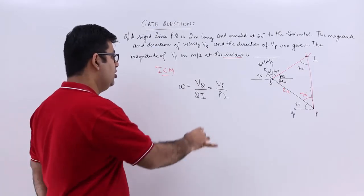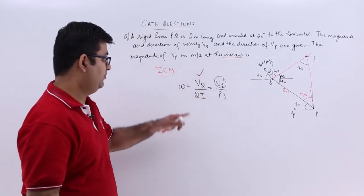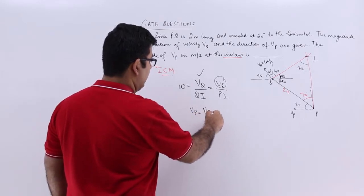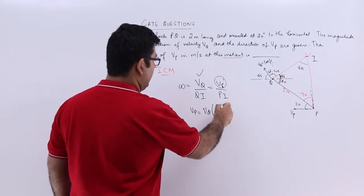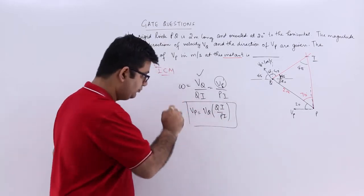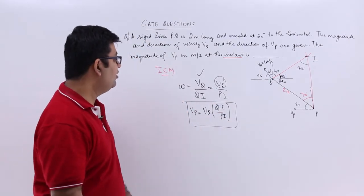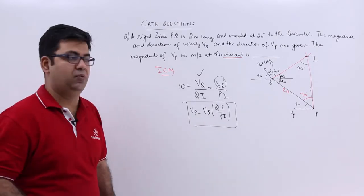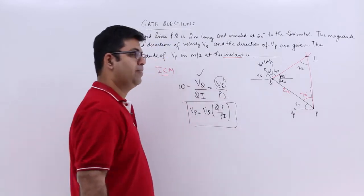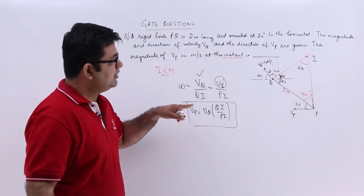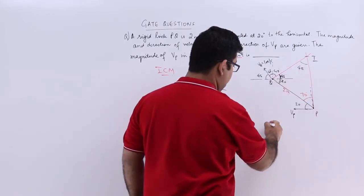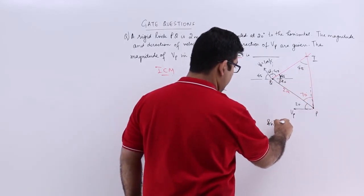I know vq and I need to find vp, so from this equation I can say that vp equals vq times qi upon pi. I don't know the value of qi and pi. How do I find that out? Look at this triangle PIQ and start applying the sine rule. You will have sine 70 by qi.